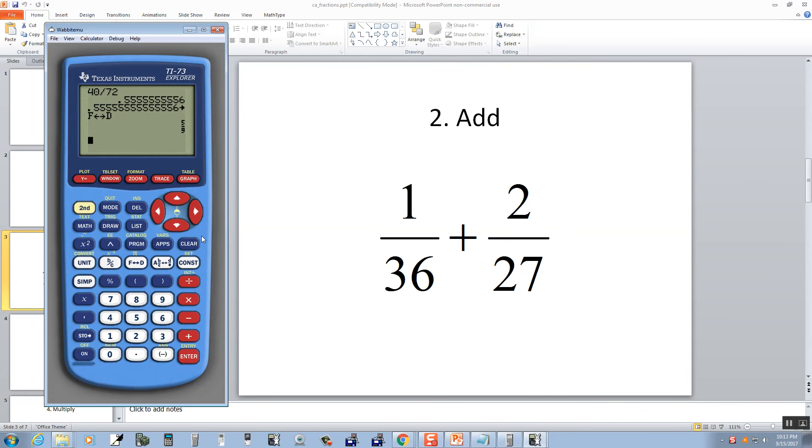Now in this one, let's say I want to add this. I do 1 divided by 36, plus 2 divided by 27. Press enter and we get our decimal. Again, I'll push the F, D, and then enter. And our answer is 11 over 108.